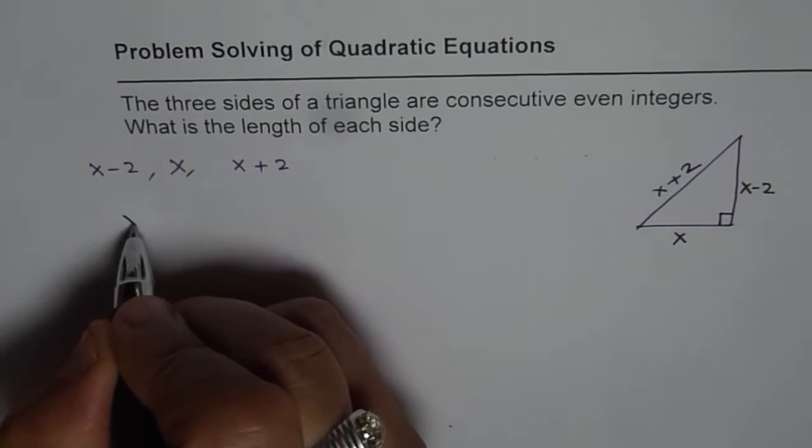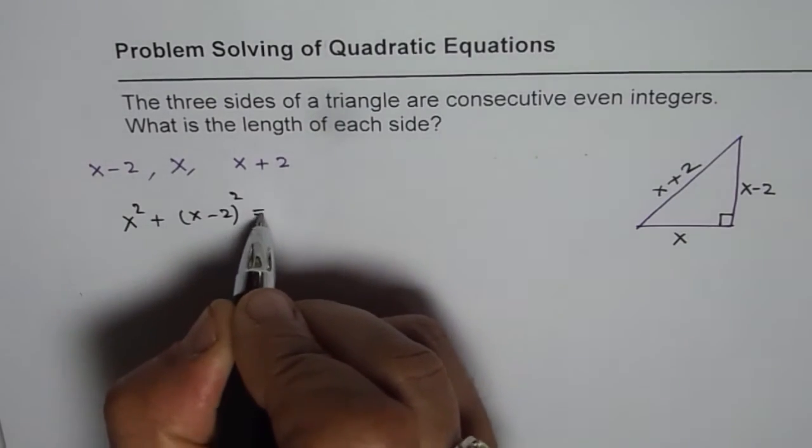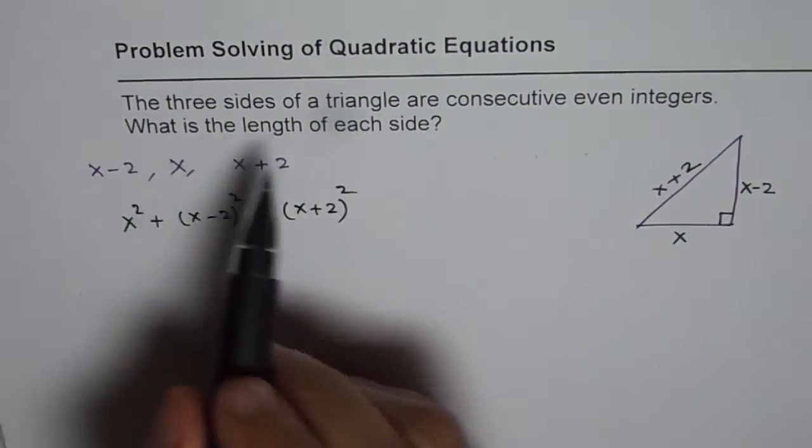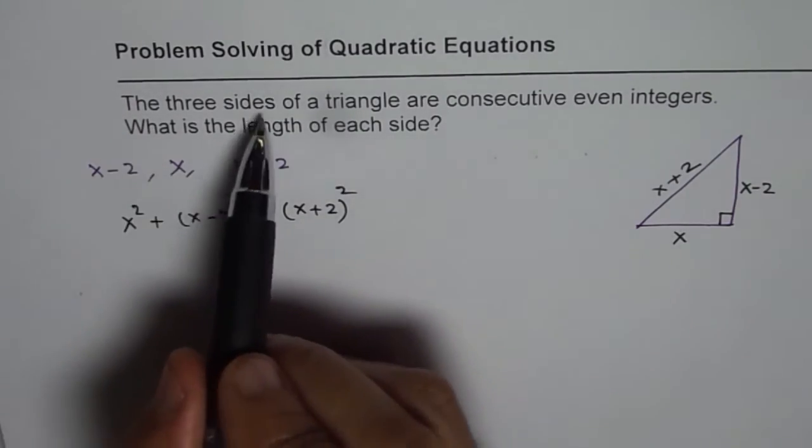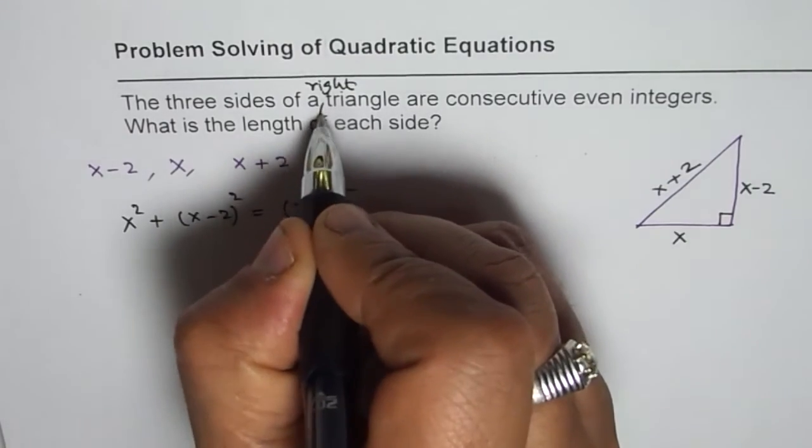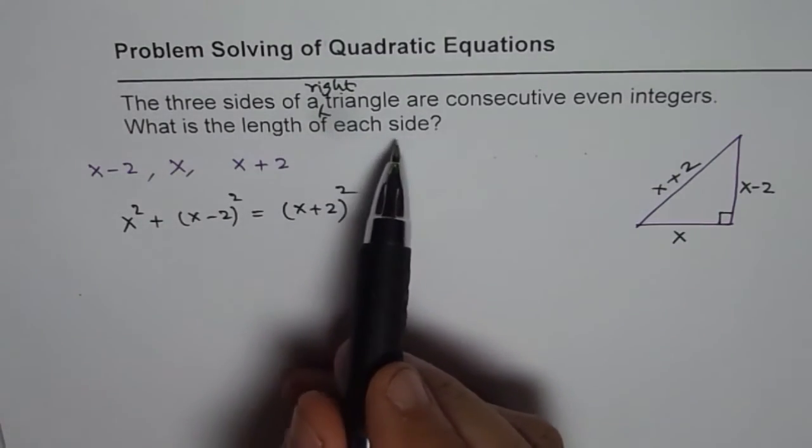Then, in that case, we have x squared plus (x minus 2) squared equals (x plus 2) squared. I think there's a typing error. So, three sides of a right triangle. Let me add this. Are consecutive even integers? What is the length of each side?